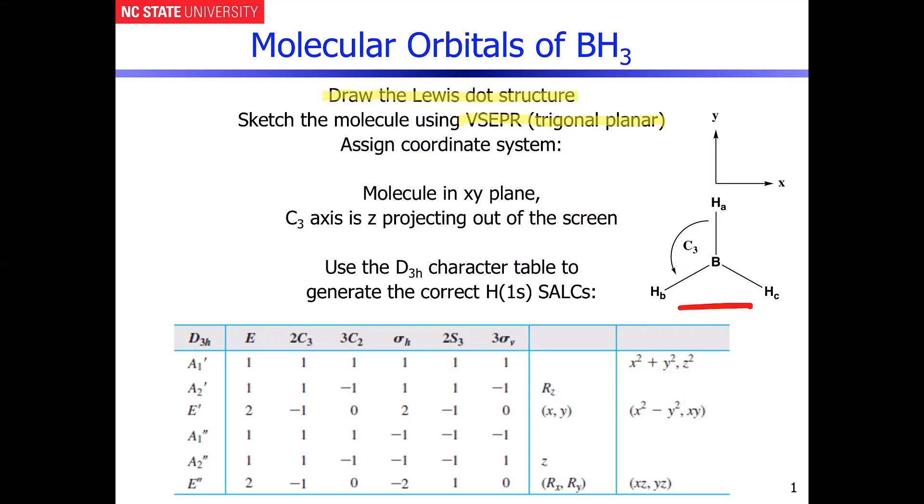In this particular case, all the symmetry elements lead you to assign this to the D3h character table. And that is going to be the character table we now have to use to generate the symmetry-adapted linear combinations that result from generating that H3 group orbital.